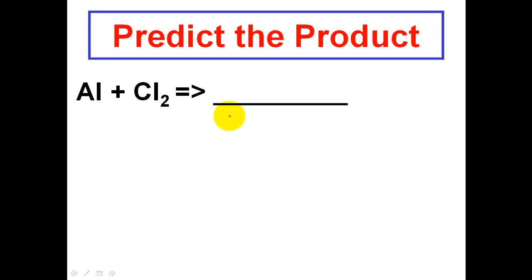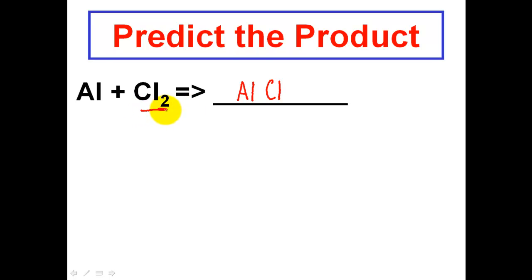This is going to be a synthesis reaction, where two elements are going to come together to form one compound. The possible combinations here are aluminum and chlorine. As I said in the last example, you leave the subscripts — like the 2 — on the left-hand side of the equation. When you make a product, you have to make brand-new subscripts. What I've made here is an ionic compound: aluminum and chlorine, which is aluminum chloride.